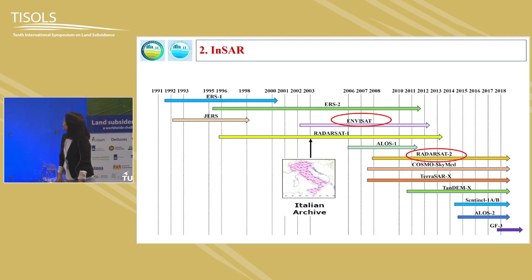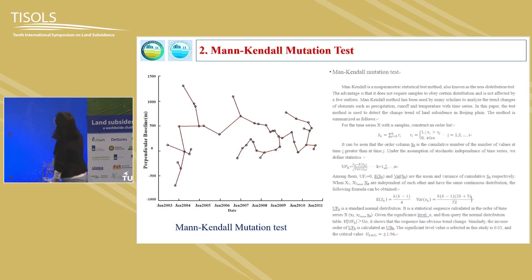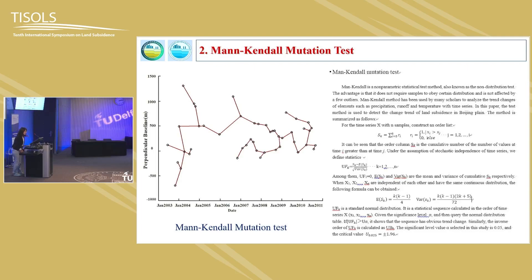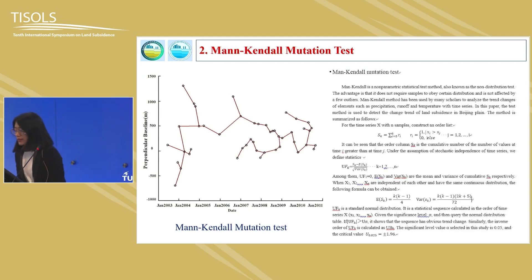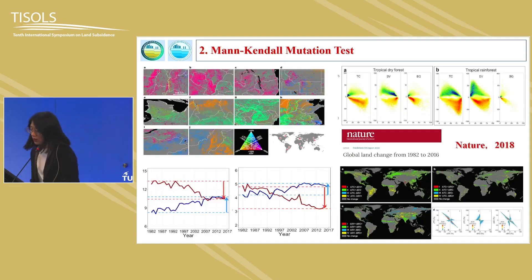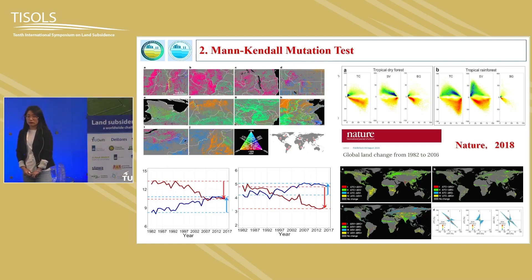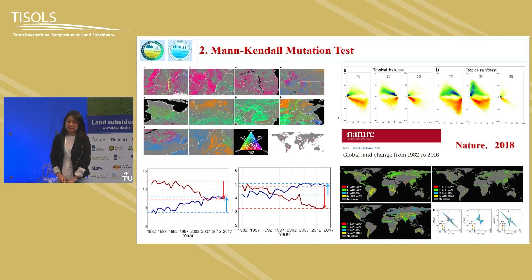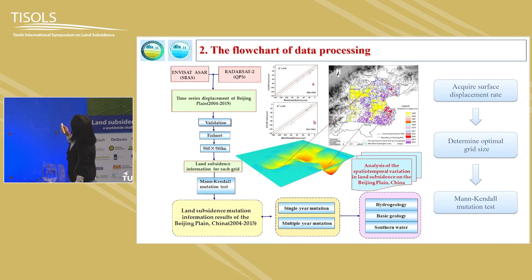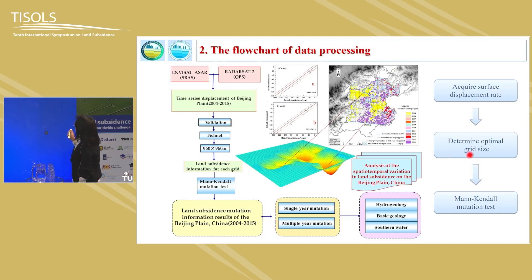Let's see the methodologies. First, we use ENVISAT-ASAR and RADARSAT-2 data combined with InSAR technology to get the surface displacement from 2004 to 2015. Then we perform the Mann-Kendall mutation test. The Mann-Kendall is a non-parametric statistical test method also used to research various elements, especially runoff, temperatures, and land changes. In this research, we use this method to acquire the land subsidence mutations in Beijing Plain. We have three goals: first, to acquire the surface displacement from 2004 to 2015; then to determine the optimal gradesets; and then to perform the Mann-Kendall mutation analysis.